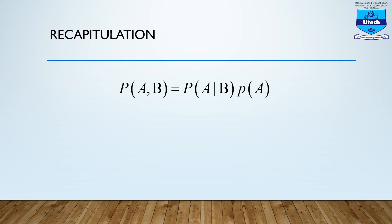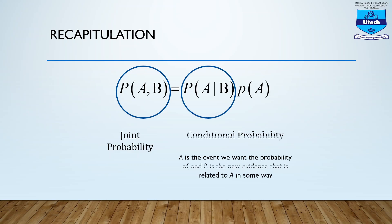Before going deeper into decision theory, let us recapitulate certain terms. You are already familiar with this particular equation where the first term is known as joint probability — that is, probability of A and B — meaning the probability that events A and B will occur simultaneously. Conditional probability means A is the event we want the probability of, and B is the new event related to A. That is, you already know event B has occurred, and you are calculating the probability of A — what could be the probability that event A will occur given that event B has already occurred.